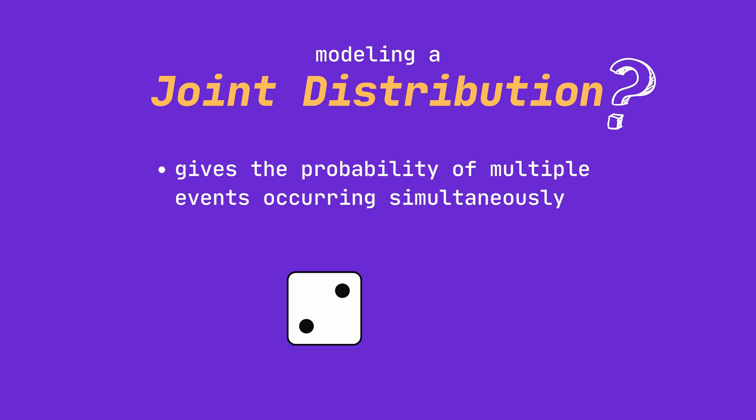For example, what is the probability of rolling a 2 on a first die roll and a 3 on a second die roll? Whilst the generative AI models model this joint distribution, the data that is created can be used in multiple different ways.